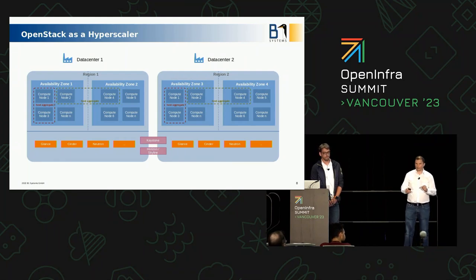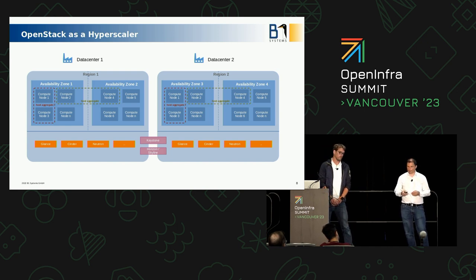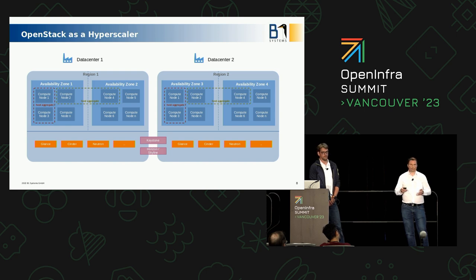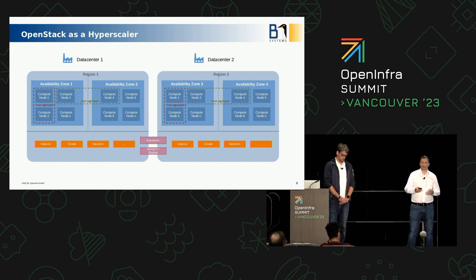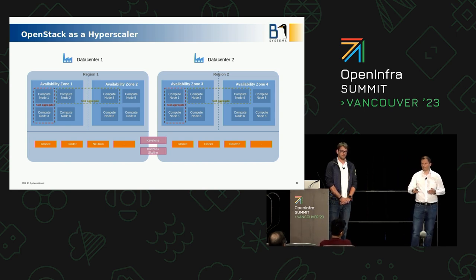This slide is the same as before, just zoomed in one level. We have the two data centers — which you can refer to as regions — and our availability zones. Within the availability zones we have our compute nodes and host aggregates. We have local services like Cinder, Neutron, or Glance, and shared services like Keystone and the OpenStack dashboards Horizon or Skyline. This architecture is very similar to what I've seen in other presentations here at the OpenInfra Summit, for example from Samsung and Stack IT.